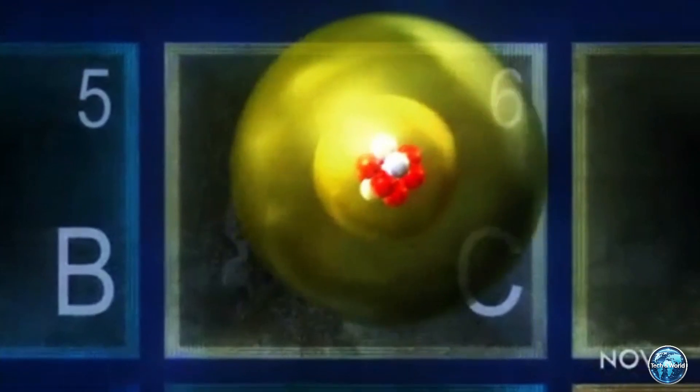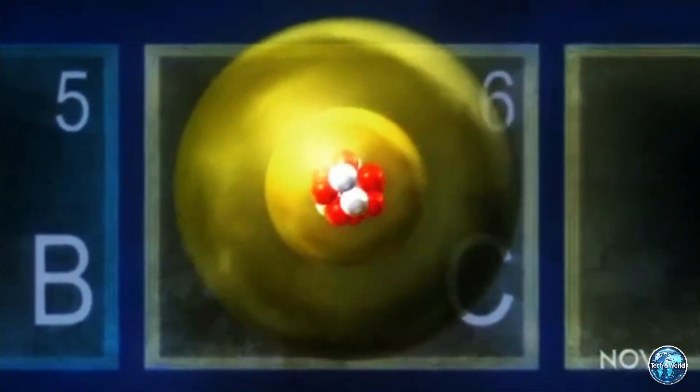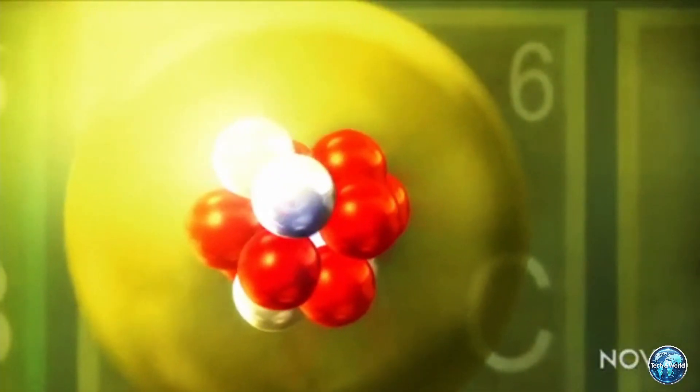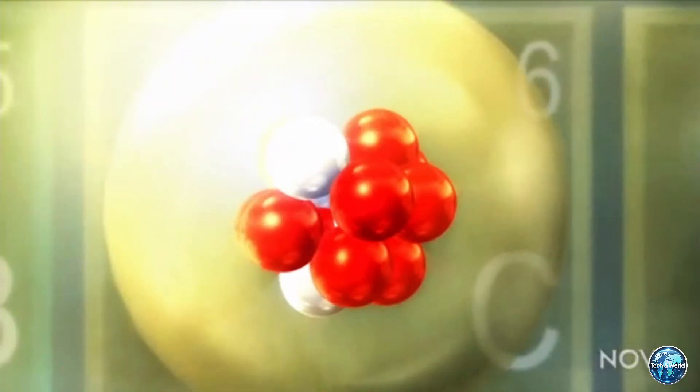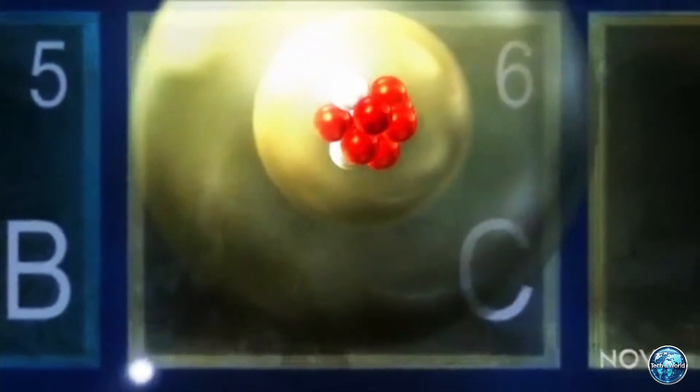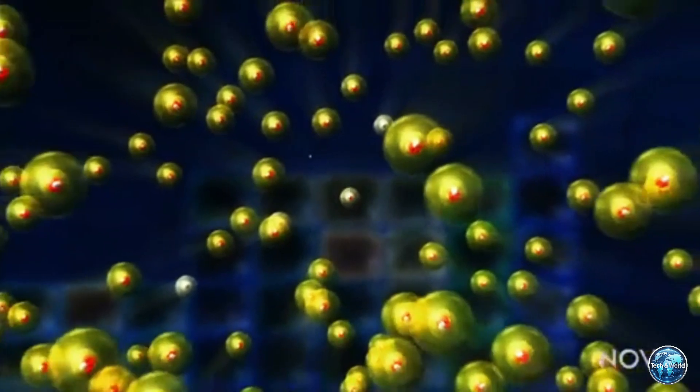Now, when these particles hit the diamond layer, their energy is absorbed and converted into electricity. The diamond acts like a converter and a shield, turning radiation into power while keeping you safe.